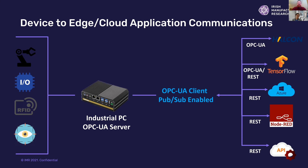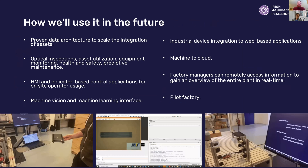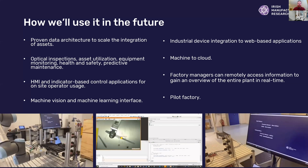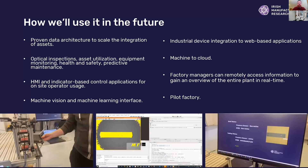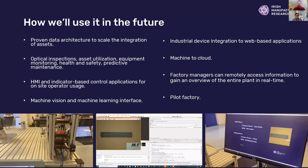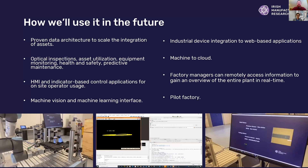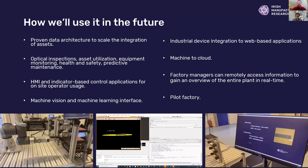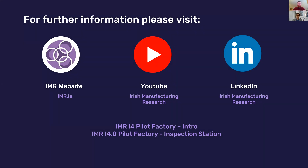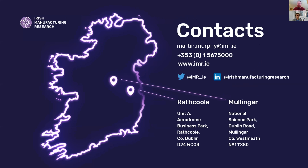Some of the work we've been doing at IMR includes an optical inspection station — using computer vision and machine learning to make sure there are no faults within the device. This is a proven data architecture used to scale the integration of assets: multiple assets can be connected into a single server and communicate with one another, legacy devices can communicate with new devices on the factory floor, and there's full coverage of information sharing between devices. I'd encourage you to visit the Irish Manufacturing Research YouTube page for videos on the pilot factory and pilot line implemented within IMR.